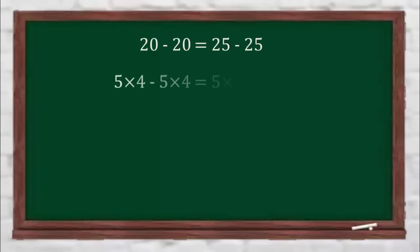Now write 20 as 5 multiplied by 4 and 25 as 5 multiplied by 5. Now from the left hand side take out the common factor 4, and from the right hand side take out the common factor 5.